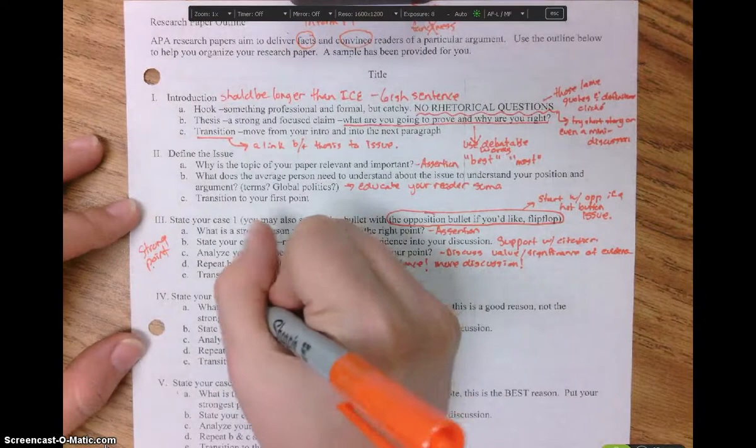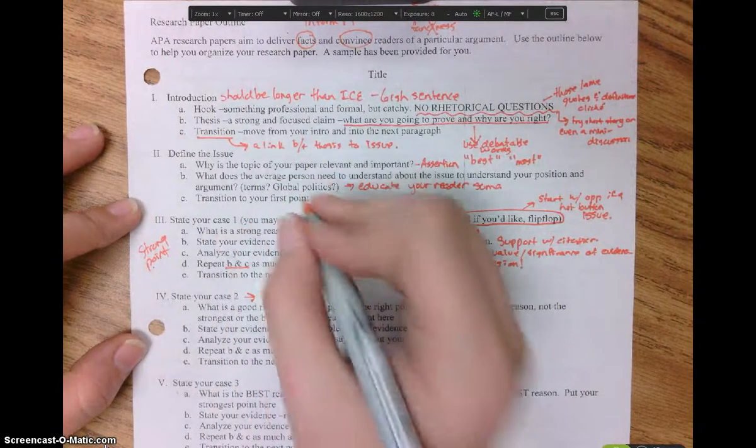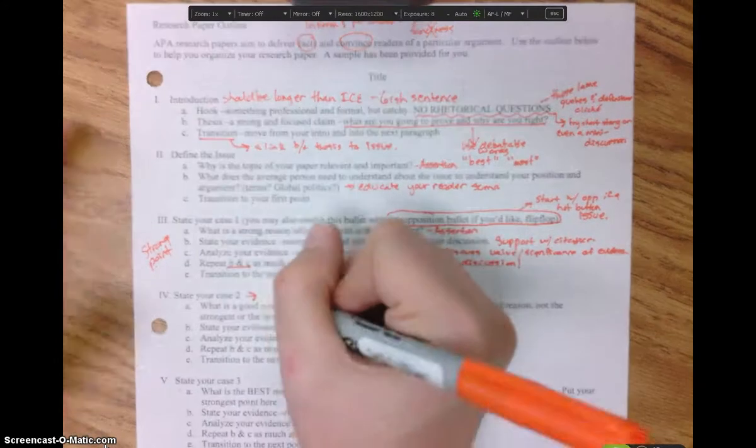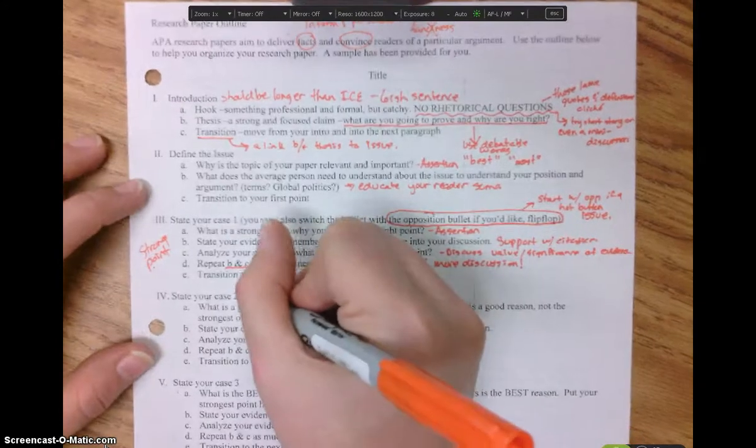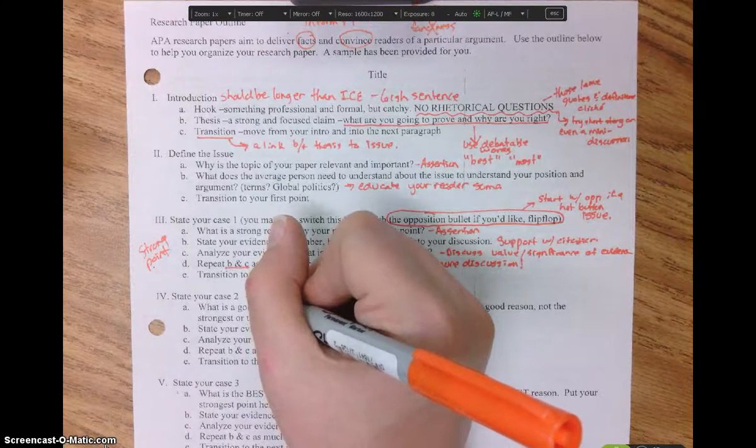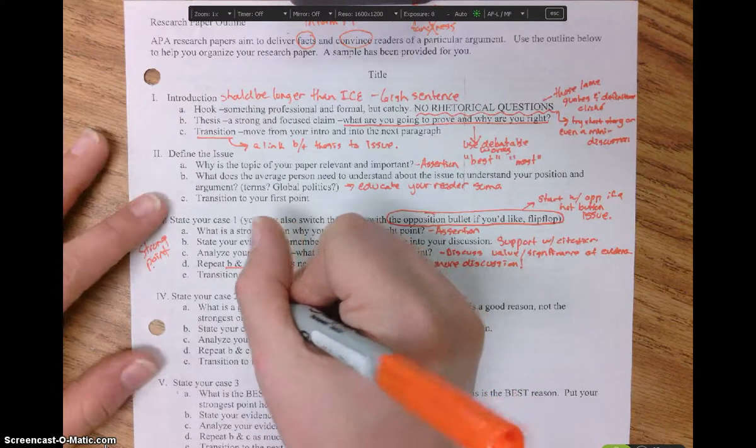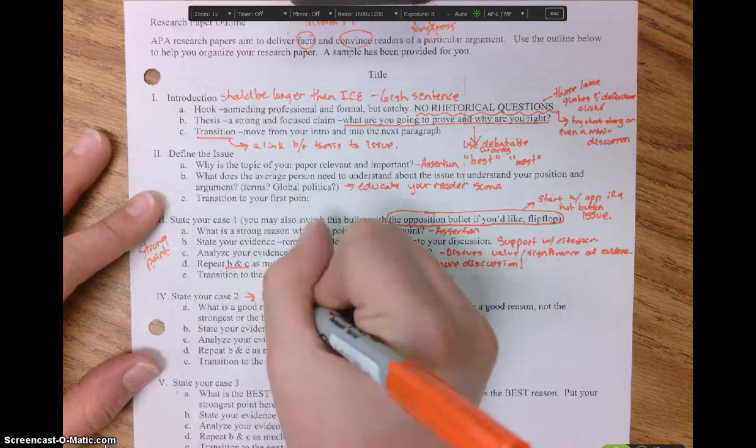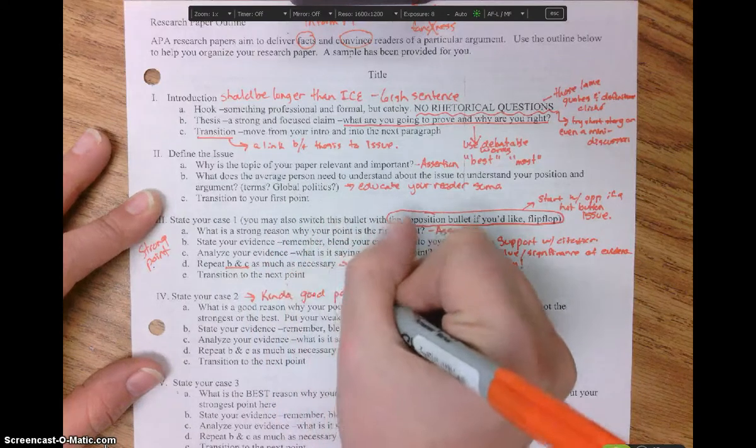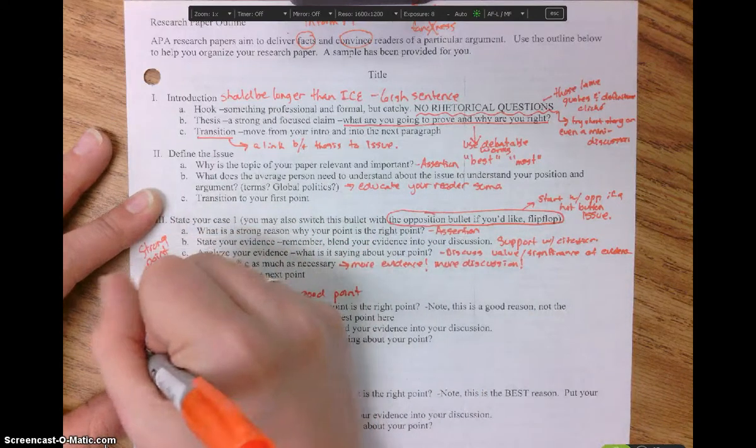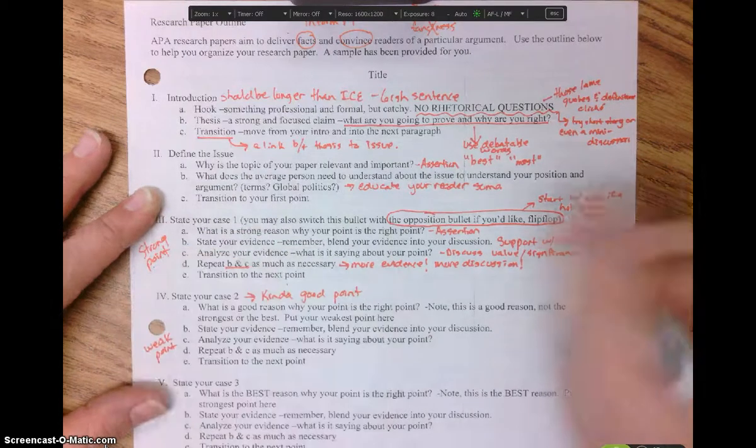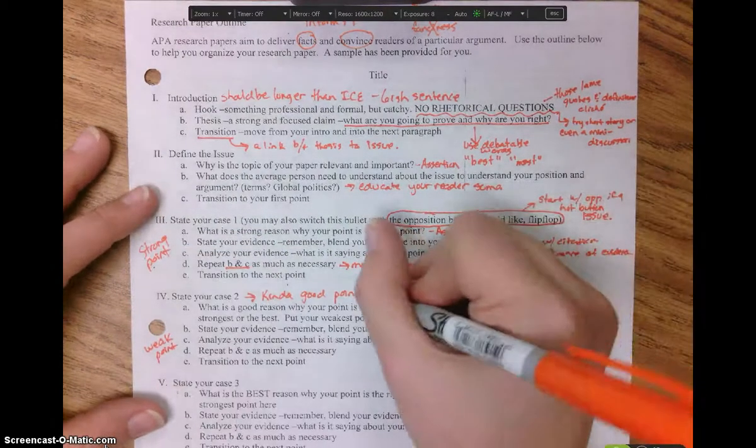State your case number two. This is going to be your weakest paragraph. So it could be a sub point or just a really weak piece of evidence. Sometimes we have two really good pieces of evidence and one of them that's just kind of good. Put your kind of good evidence here. You want your weakest point in the middle so it's sandwiched between two strong points. It might be a shorter paragraph.